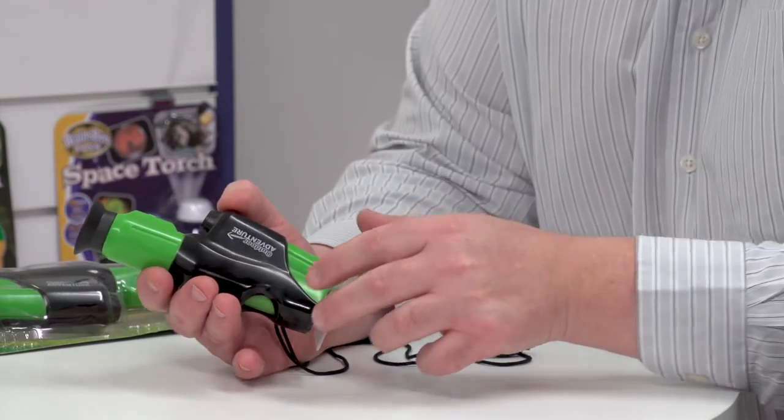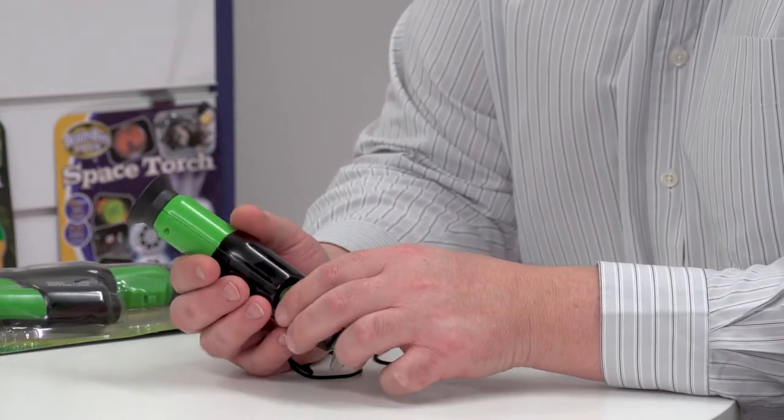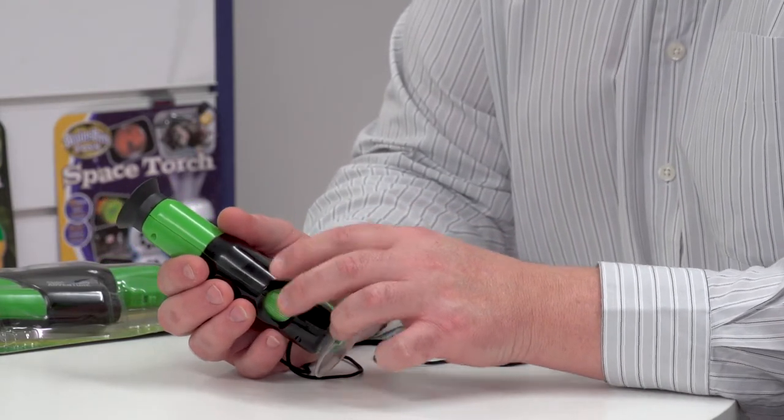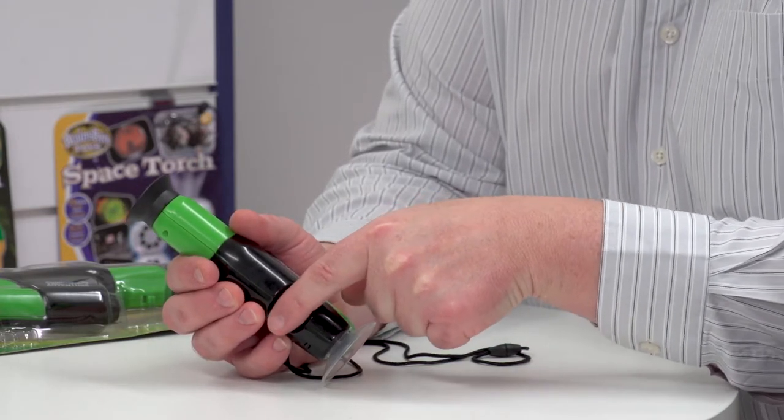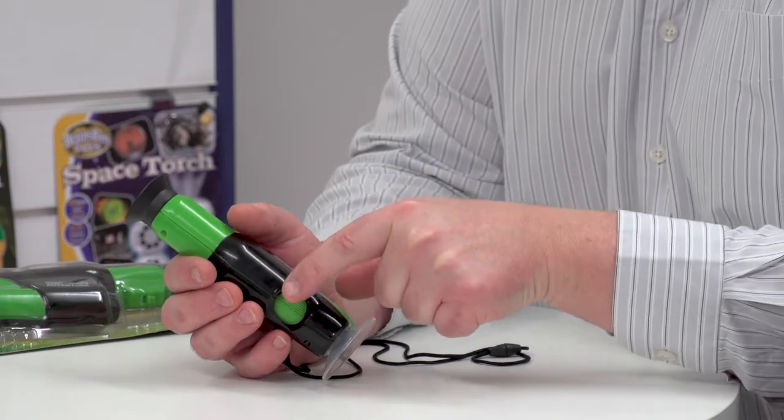And you can actually alter the magnification slightly from this dial here. Can you see the green dial that I'm rotating? That brings the lens up and down the barrel of the microscope.